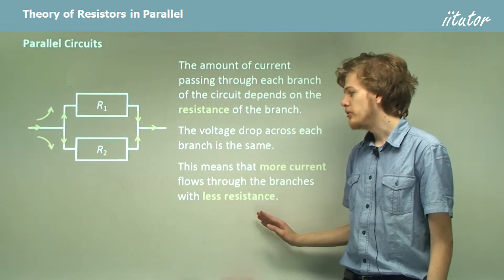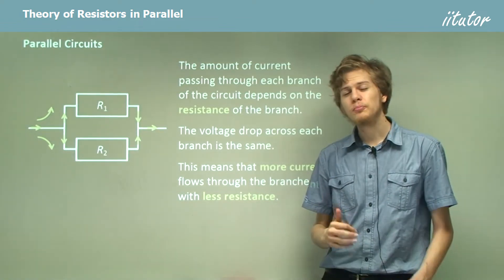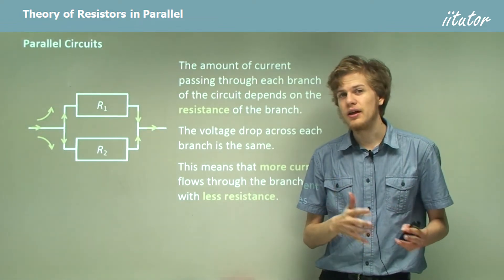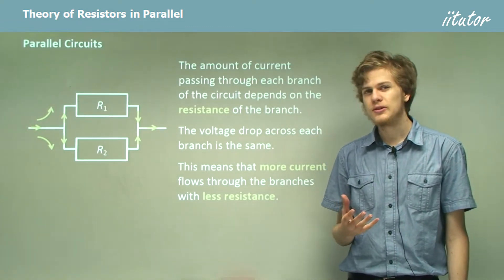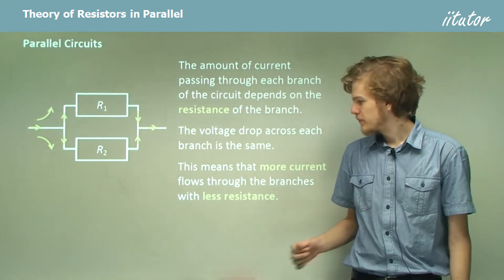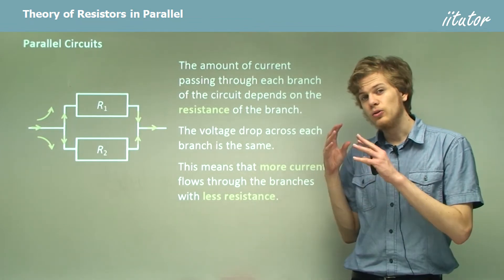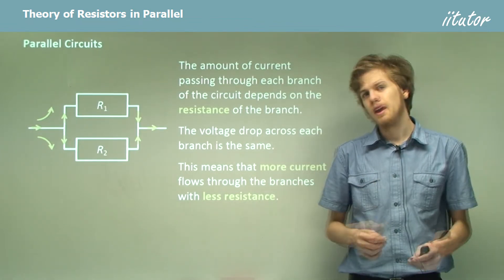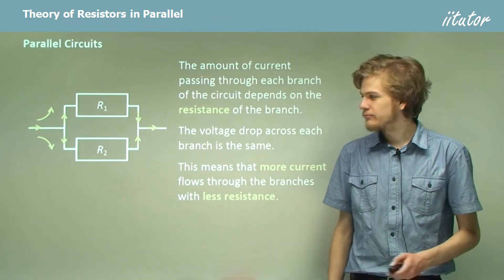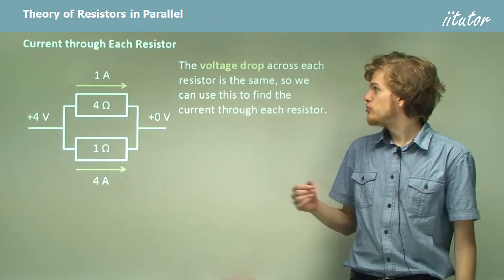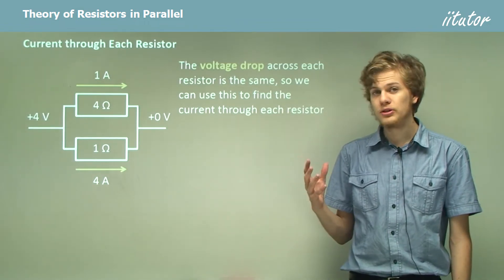More current will flow through the branches with less resistance, because multiplying the resistance and the current together gives us the voltage drop across the resistor. So if the voltage drop stays the same, then low resistors have high current and large resistors have small current. The voltage drop across each resistor will be the same, and we can use this to find the current through each one.